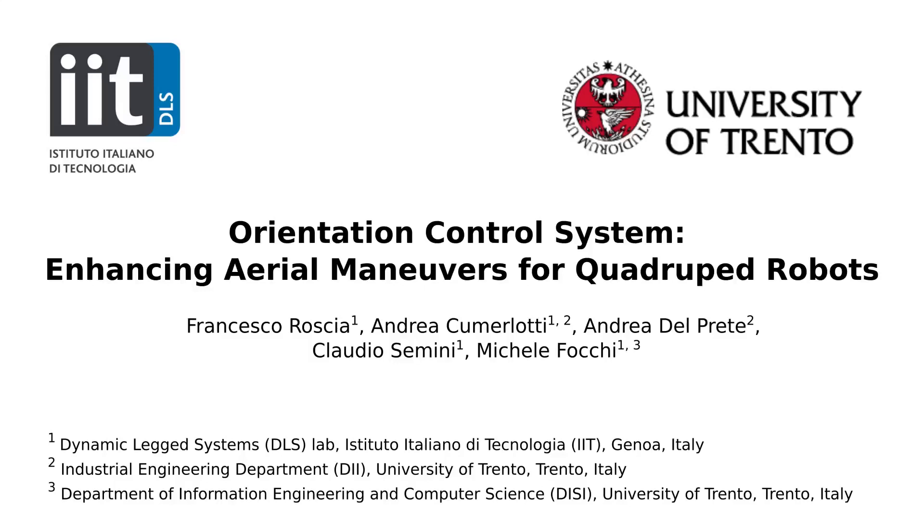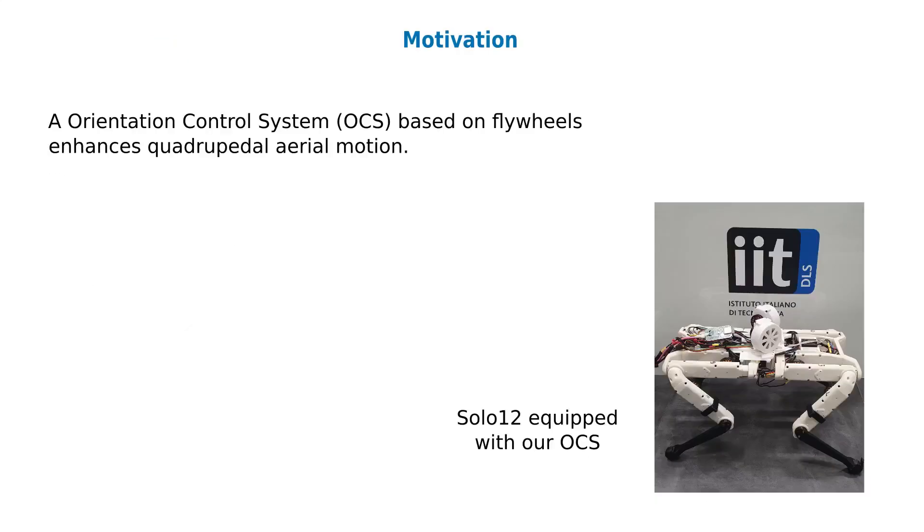In this paper, we present a compact orientation control system based on two flywheels. This gives multiple benefits to quadrupedal robots that aim to perform aerial maneuvers.